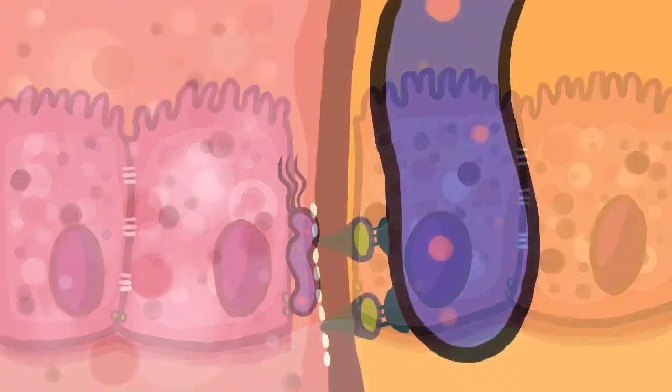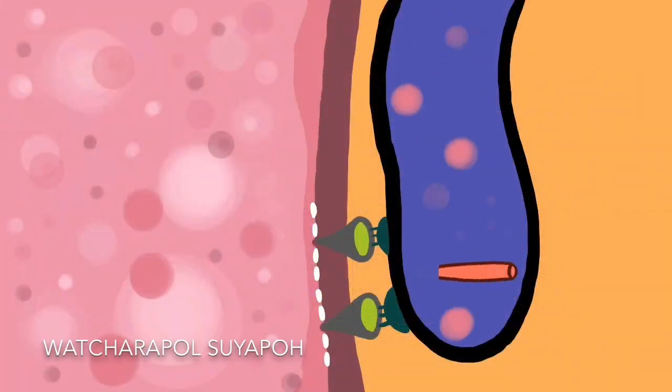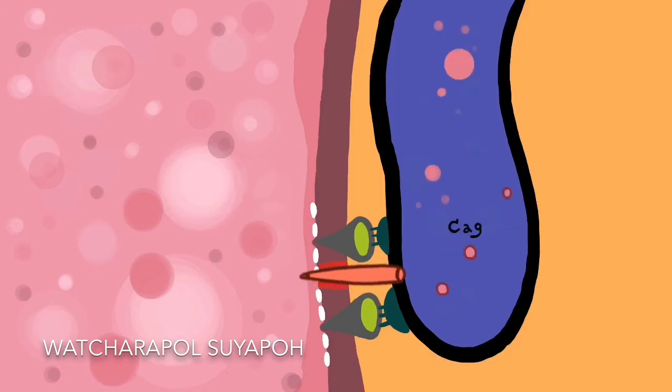She looks for a specific lock called a receptor and inserts a special key called type 4 secretion system into the door. Helen first releases CAG-A protein to make her new home more suitable.